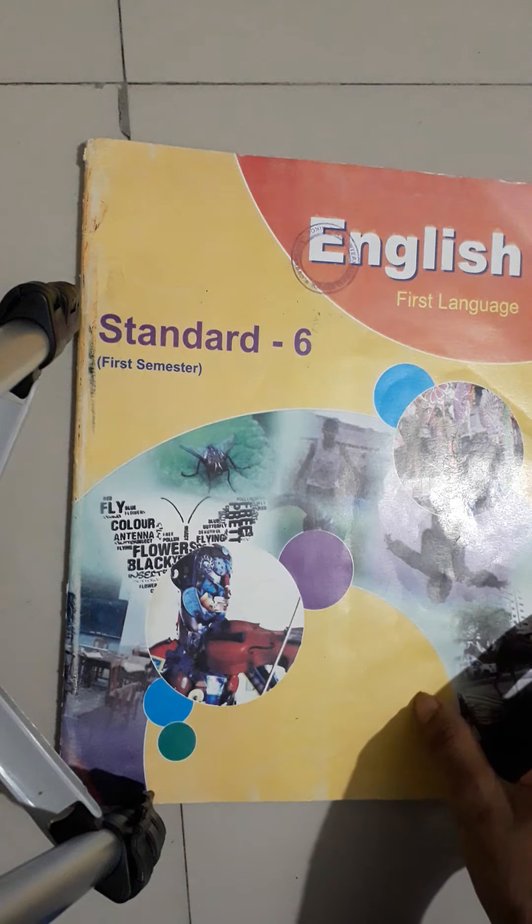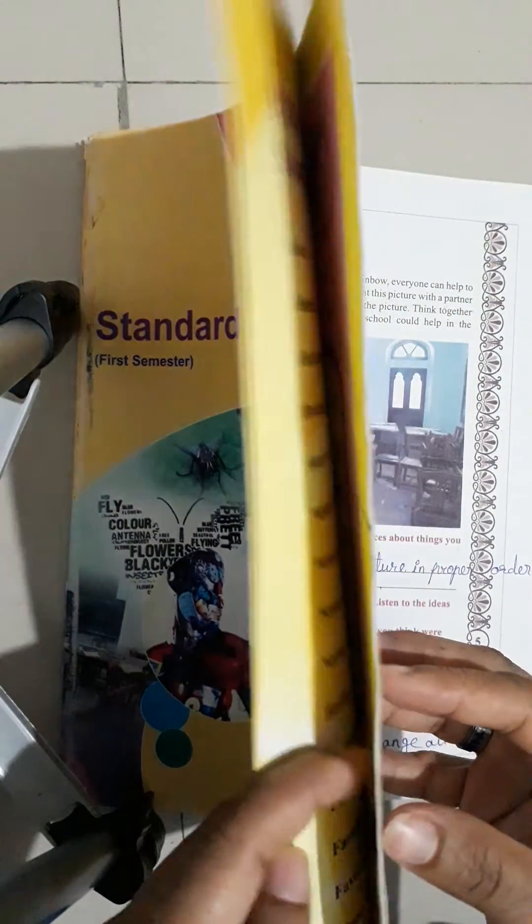Hello, myself Mrs. Kinjal Panchal. I am a teacher in James International School. Student of Standard 6, subject English. Students, open your textbook, Unit 1, the world of colors.